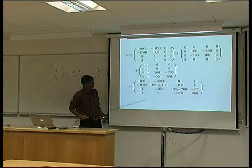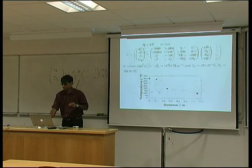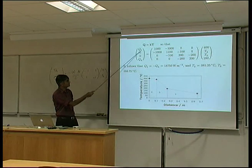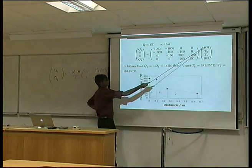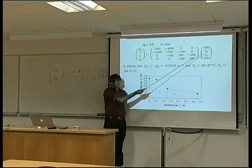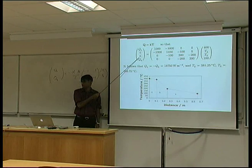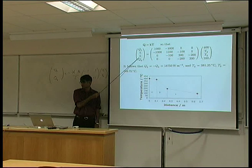Join them up, and I have got my global thermal stiffness matrix, and therefore, I have got a relationship between Q and the temperatures at all points. I don't know what T2 and T3 are.